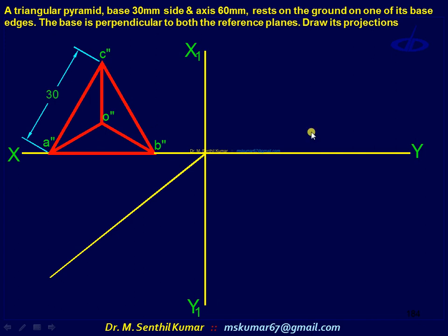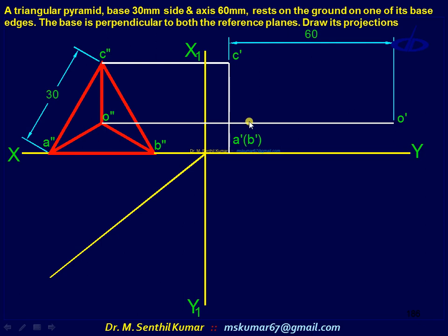From the side view, get the front view. First, transfer the base points. The distance of this base from X1, Y1 could be anything. Then draw a horizontal line, and on it set the height 60. Darken all the edges, thereby completing the front view.